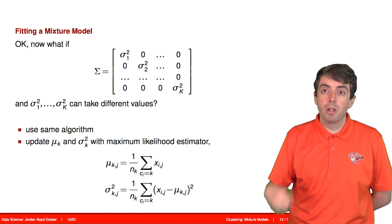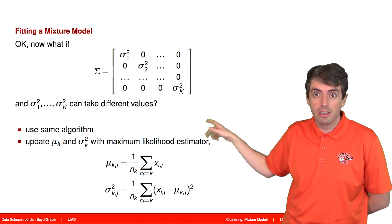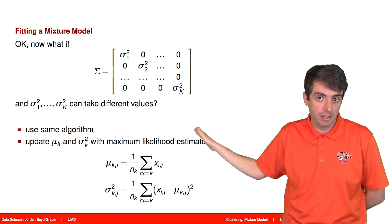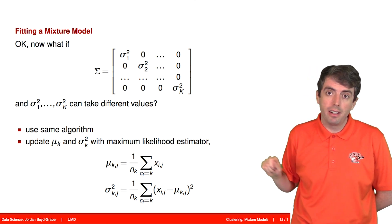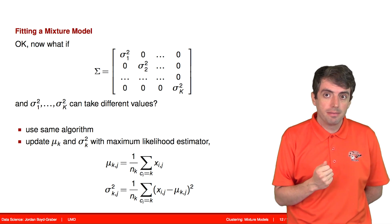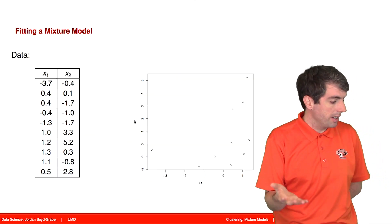So we can use the same algorithm where we use likelihood to assign points to clusters, and then we can recompute what the means and variances are using these equations. So let's see what that looks like in practice.